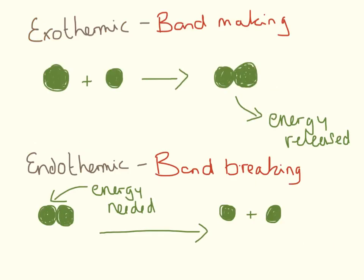The reason behind this is all to do with bond-breaking and bond-making. Exothermic reactions are all to do with bond-making — when we have two individual things and add them together, a bit of energy is released. Endothermic reactions involve bond-breaking — we have two things that are together and energy is needed to separate them. If you have two blocks of Lego, you're going to need to put energy in to separate them. That's what endothermic bond-breaking is, and exothermic bond-making is just the reverse.